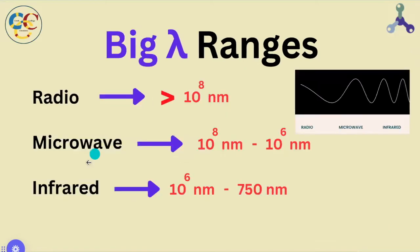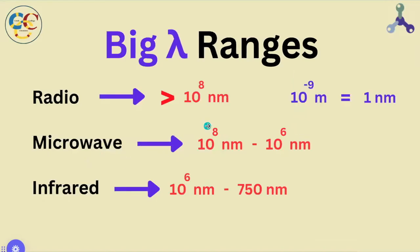Here are the wavelength ranges for radio, micro, and infrared waves. It's also worth noting that because most of the wavelengths we deal with are so darn small, we use units of nanometers. And a nanometer is 10 to the minus 9 of a meter.